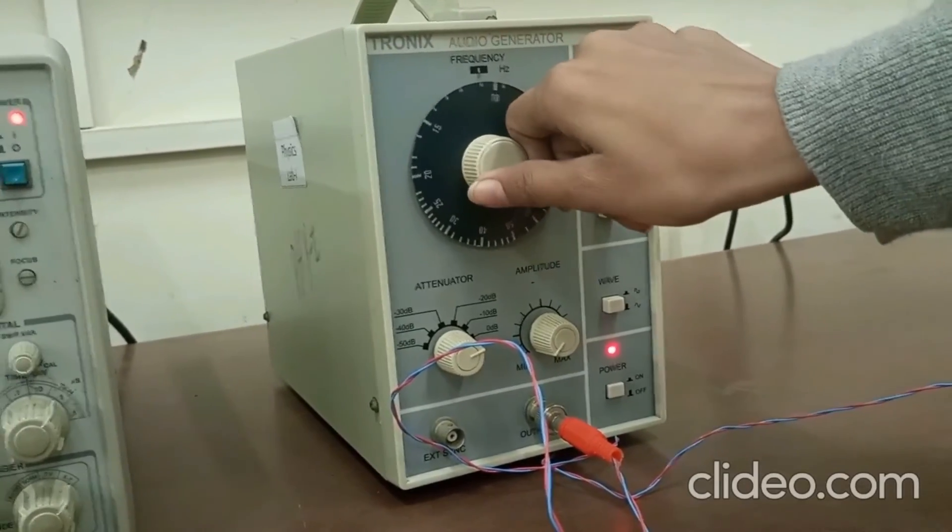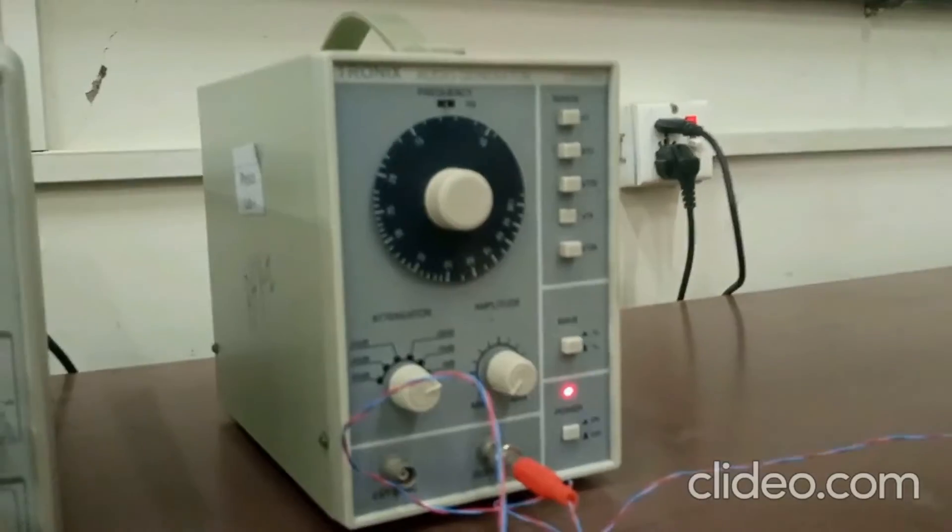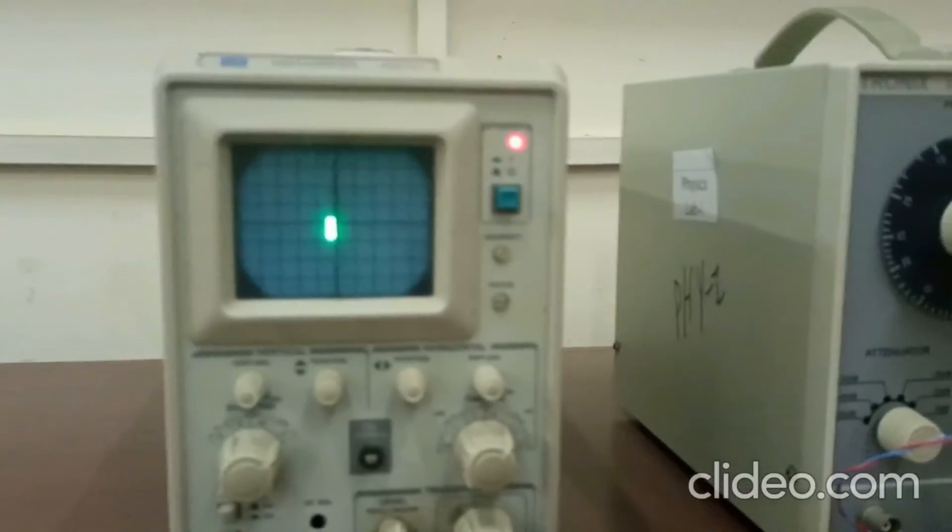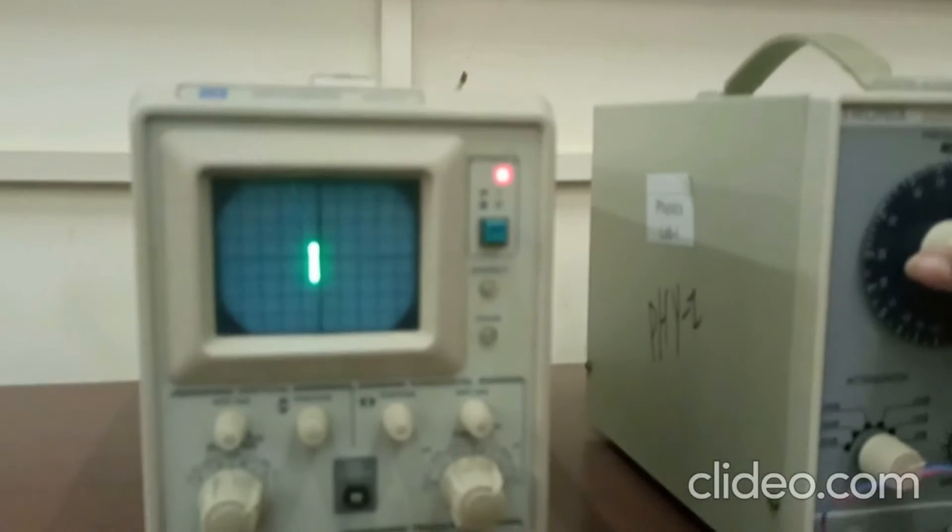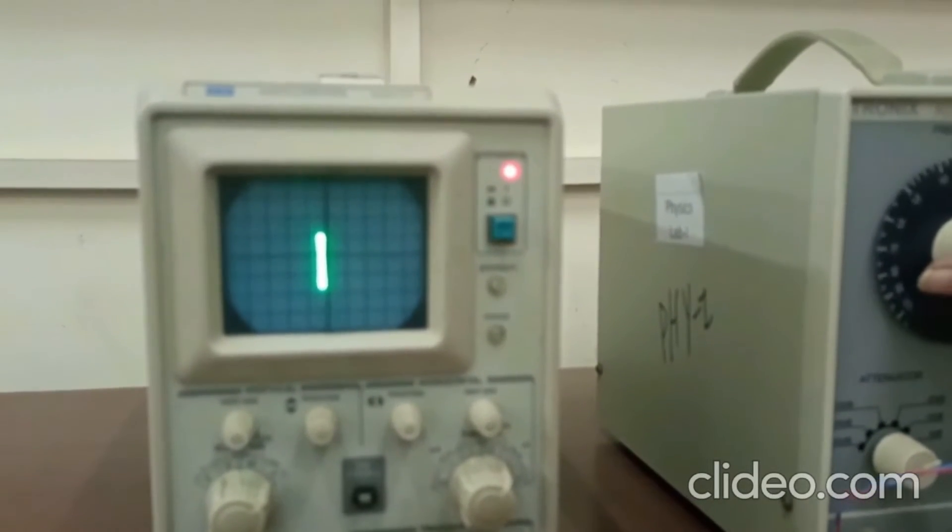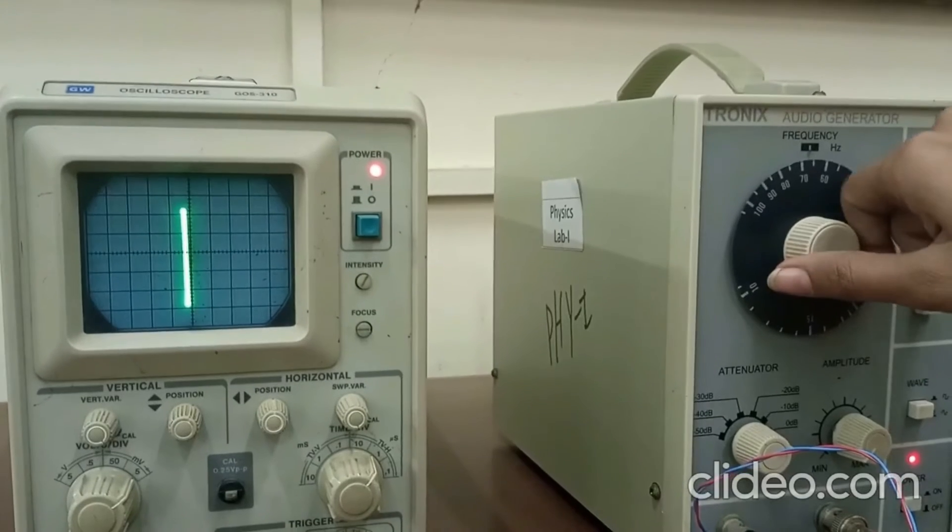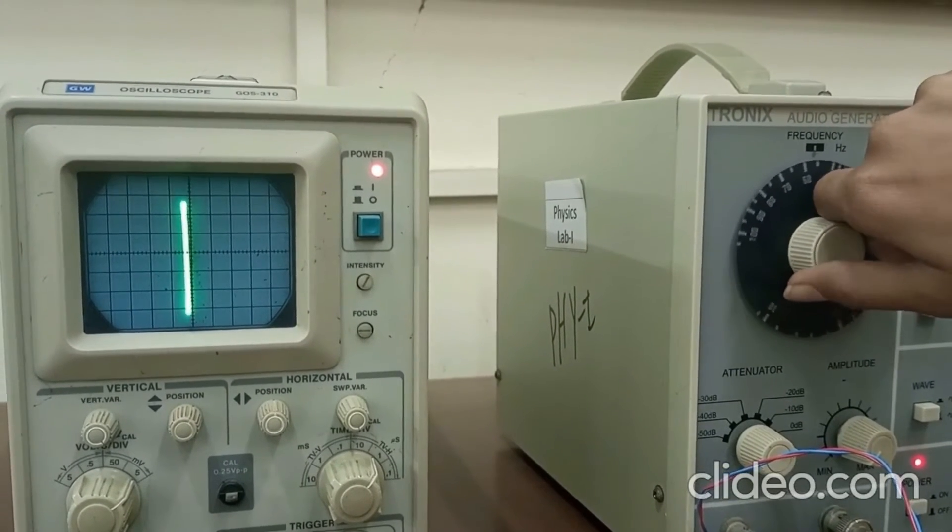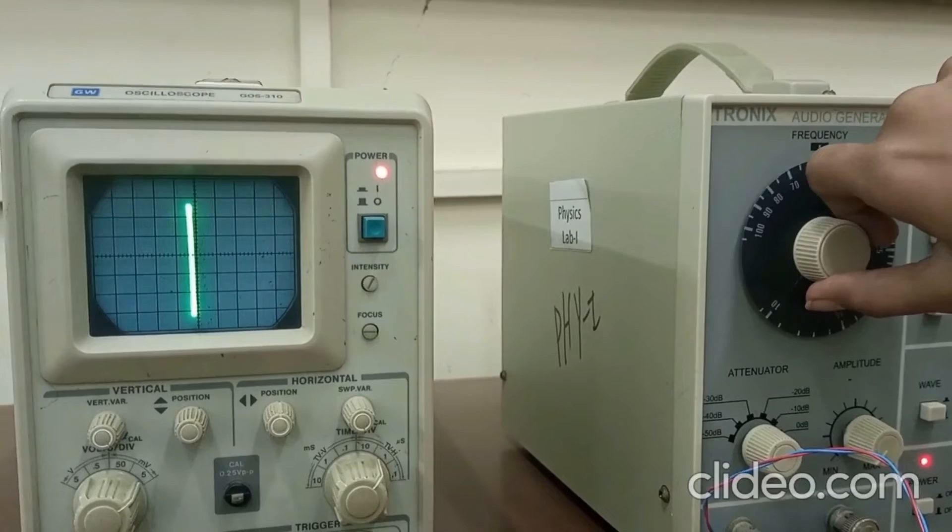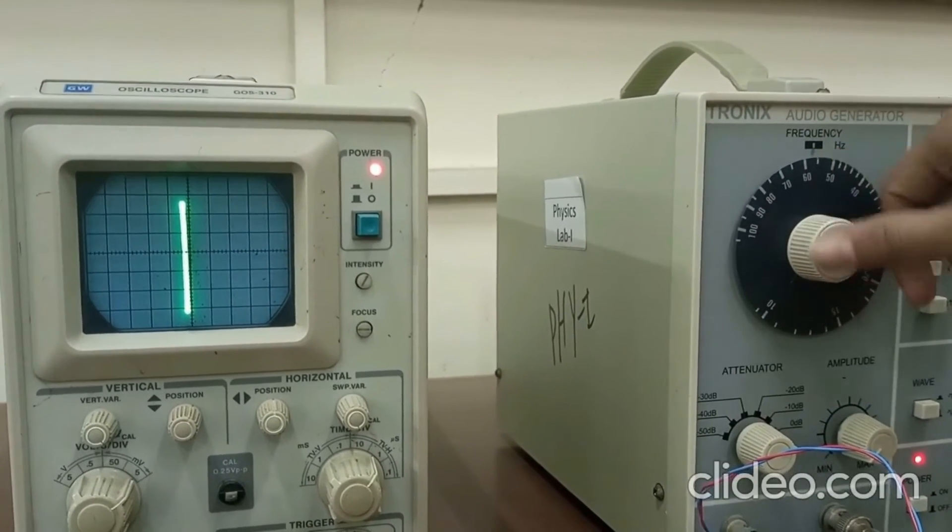As I increase the frequency, the amplitude, as you can see, the amplitude is also increasing. And at a particular point, it starts decreasing. Here it is. The point at which the amplitude starts decreasing is the resonant frequency.